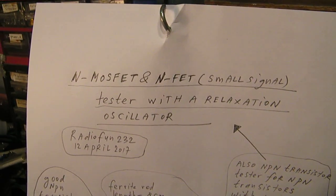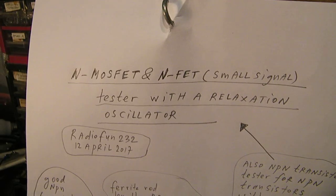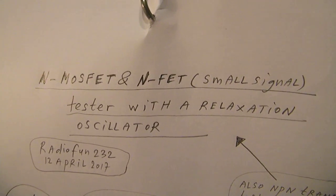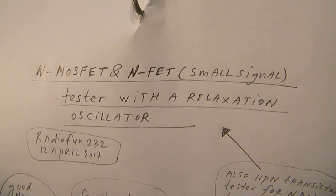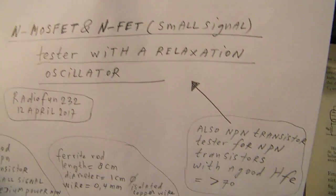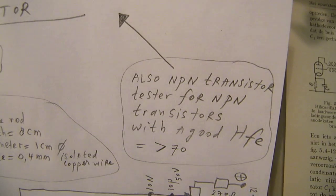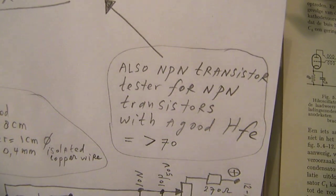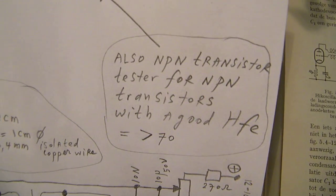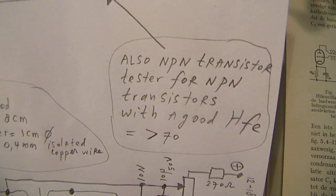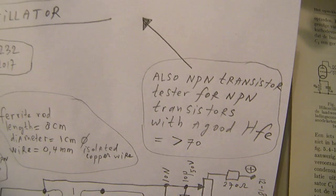In this video, a tester for MOSFETs and small signal FETs. The peculiar thing is that also NPN transistors with a good current amplification, say above 70, can be tested.